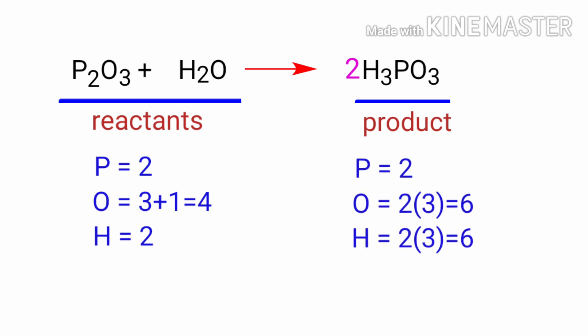The phosphorus atoms are balanced. Now we need to balance the hydrogen and oxygen atoms. To do this we need to put a coefficient of 3 in front of H2O.